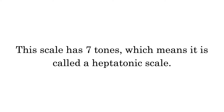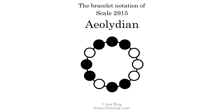This scale has 7 tones, which means it is called a heptatonic scale. This is a bracelet notation diagram of scale 2915. The shaded circles represent tones that appear in the scale, and they are read clockwise, starting at the top.